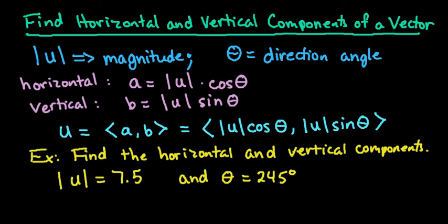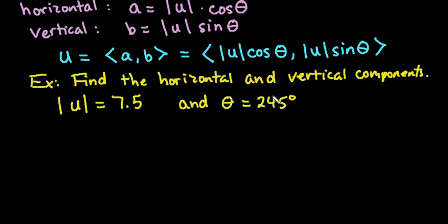We're trying to find basically the ordered pair or the terminal points of our vector and which quadrant they will be in. All right, so let's get started. What I have here is we're going to find the horizontal and vertical components for a vector u that has magnitude of 7.5 and a direction angle of 245 degrees.